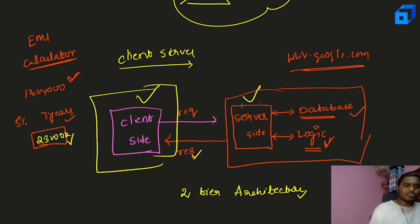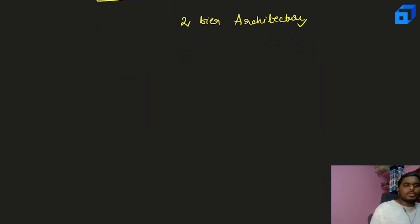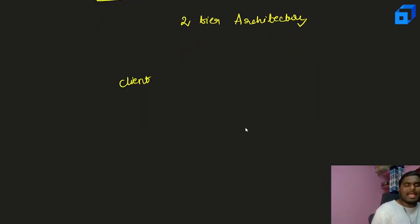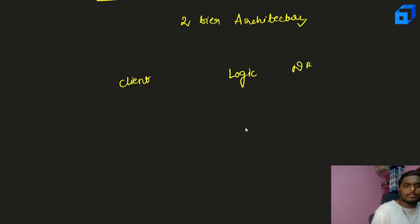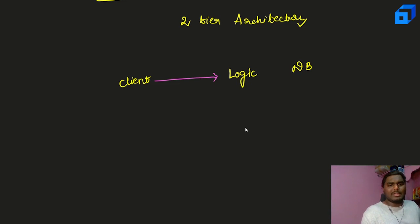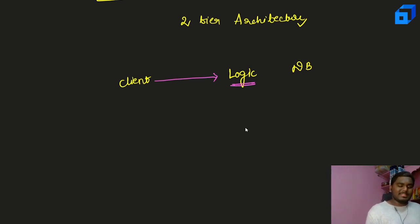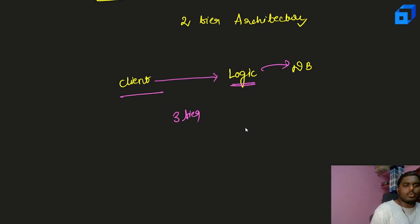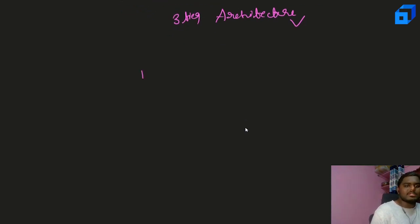Now let's look at cases where more components are involved. On the server side, we can divide it into two parts — logic and database. Sometimes I don't need to go to the database at all. So the logic layer first checks whether the request is logic-based or requires database access. If it's logic-based, it's handled there. If the database is needed, it goes to the DB layer. This kind of setup is called a three-tier architecture.